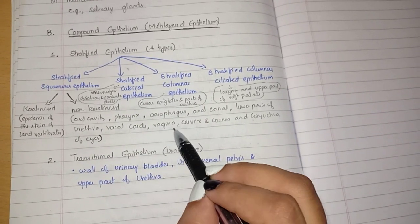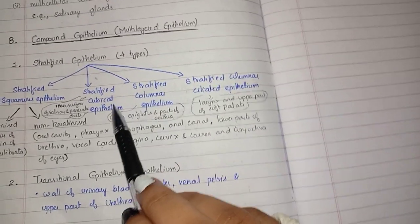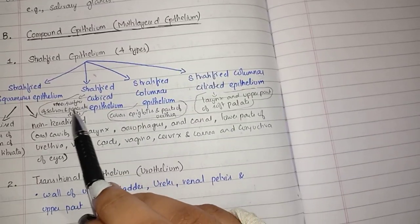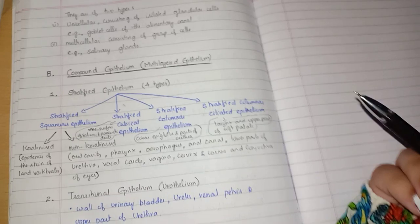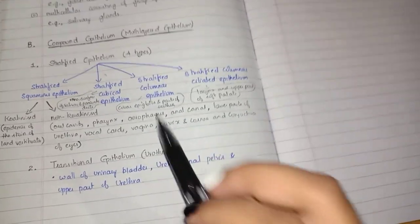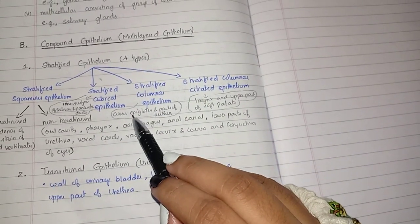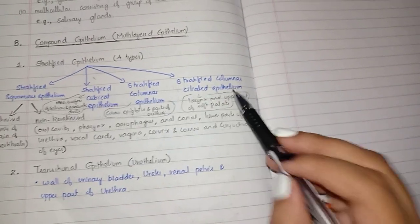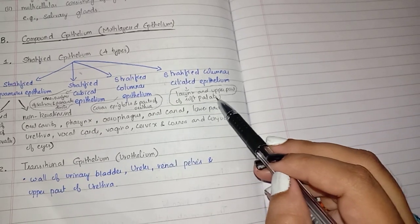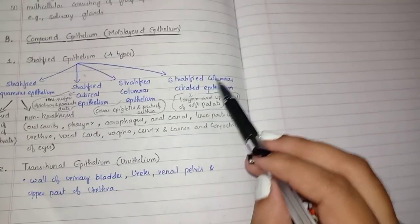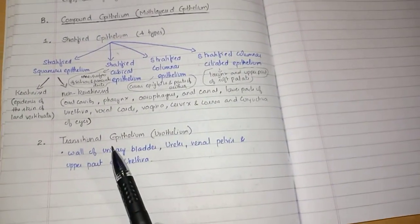Stratified cuboidal epithelium is found on the inner surface of salivary and pancreatic ducts. Stratified columnar epithelium covers the epiglottis and parts of the urethra. Stratified columnar ciliated epithelium is found in the larynx and upper part of the soft palate.